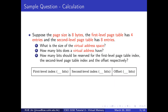For the first kind of question — calculation — here we show an example. We suppose that the page size is 8 bytes and we have a two-level page table. The first-level page table has 4 entries and the second-level page table has 8 entries. We want to know the size of the virtual address space, how many bits we should use for the virtual address, and how many bits we should use for each element in the address — the first-level page table index, the second-level page table index, and the offset.